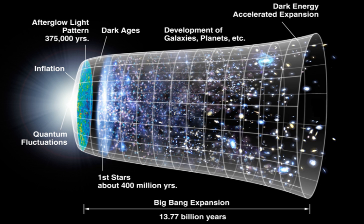An important feature of the Big Bang space-time is the presence of particle horizons. Since the universe has a finite age, and light travels at a finite speed, there may be events in the past whose light has not had time to reach us. This places a limit — a past horizon — on the most distant objects that can be observed. Conversely, because space is expanding and more distant objects are receding ever more quickly, light emitted by us today may never catch up to very distant objects. This defines a future horizon, which limits the events in the future that we will be able to influence.